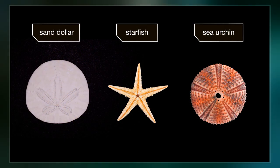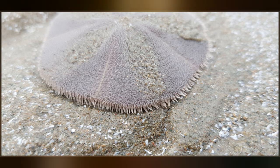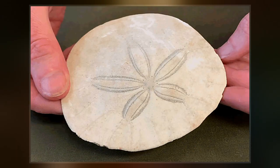The test consists of calcium carbonate plates arranged in a five-fold symmetric pattern. The test of certain species of sand dollar have slits called lunules that can help the animal stay embedded in the sand to stop it from being swept away by an ocean wave.